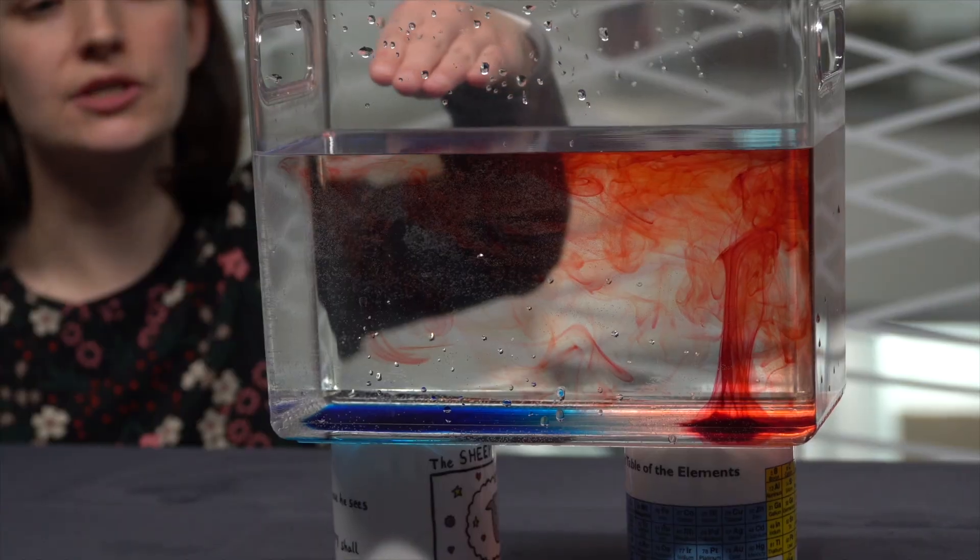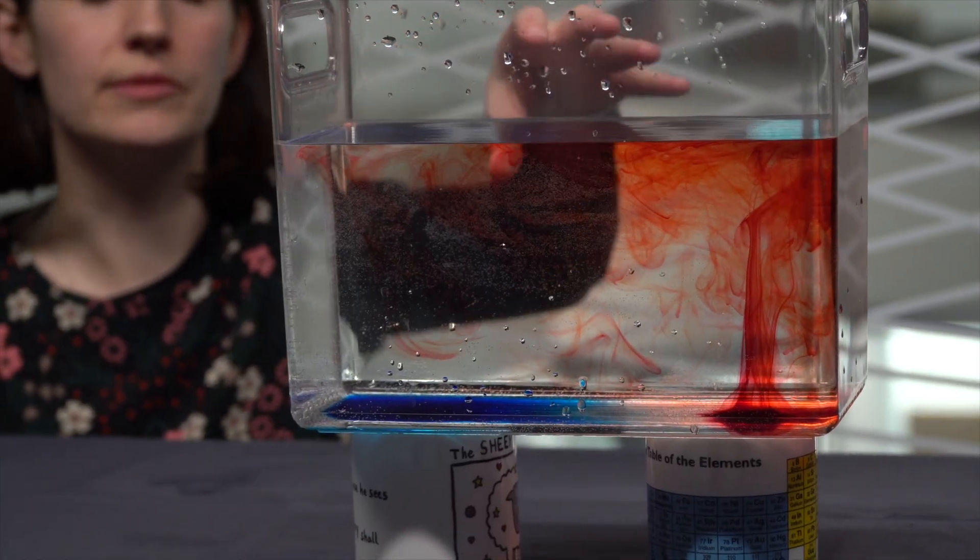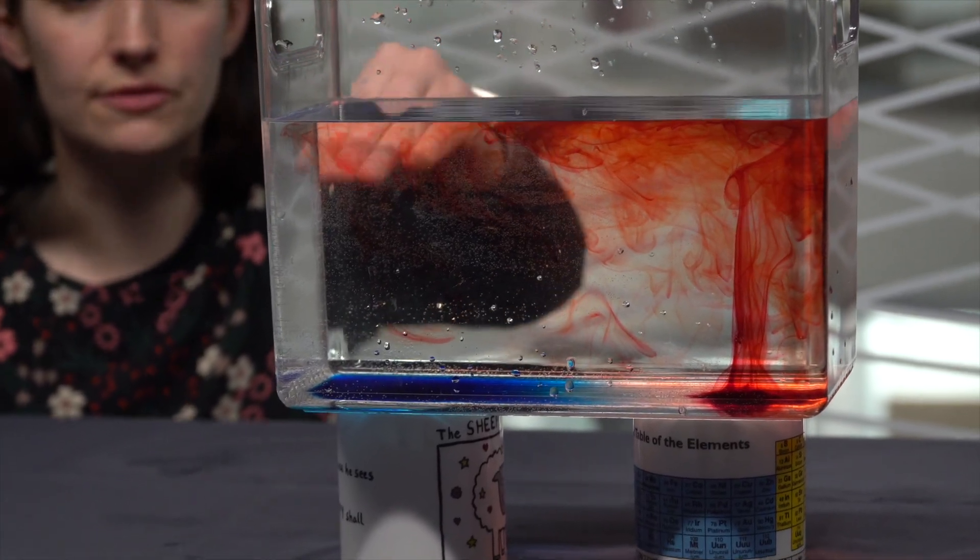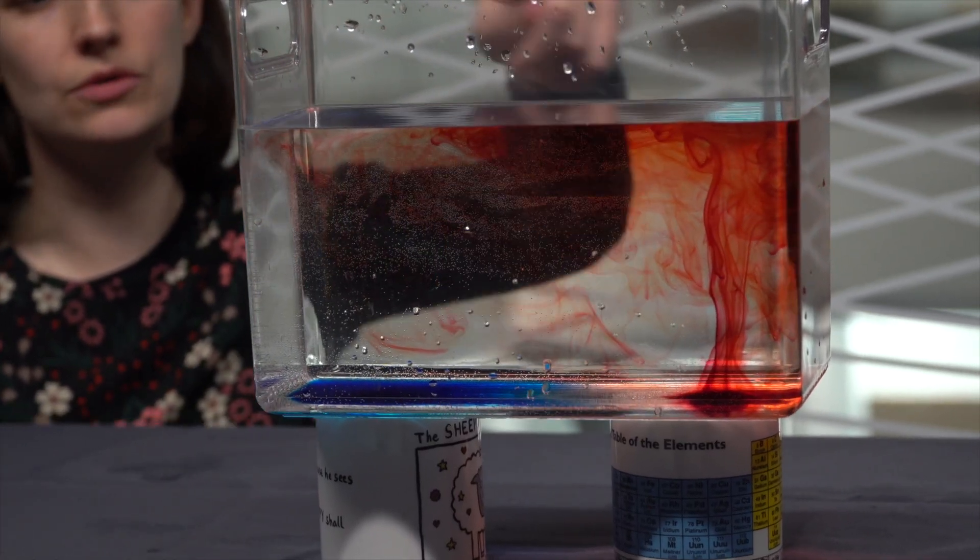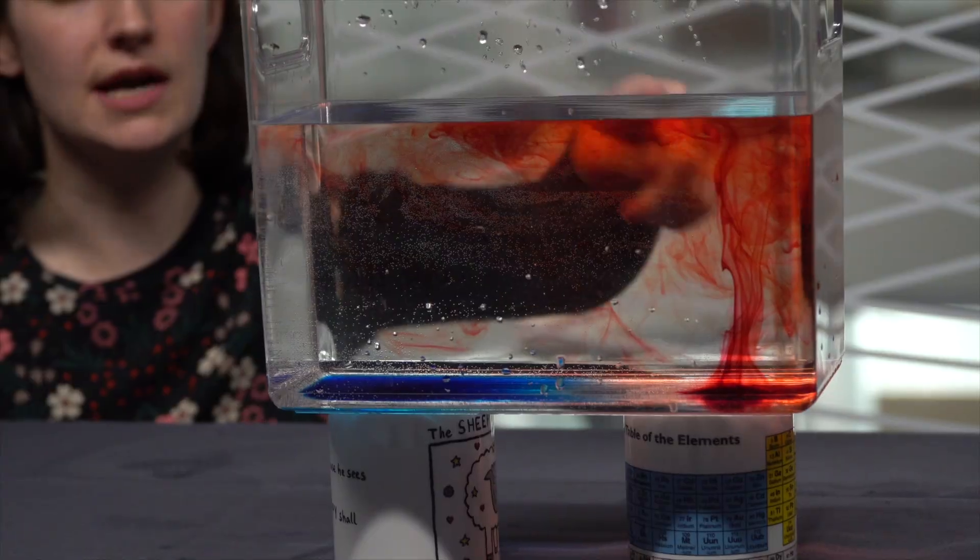As it cools, eventually it becomes more dense again, or increases its density, and starts to fall back down. Cool and fall back down. So we start to get this whole convection current moving around in the tank.